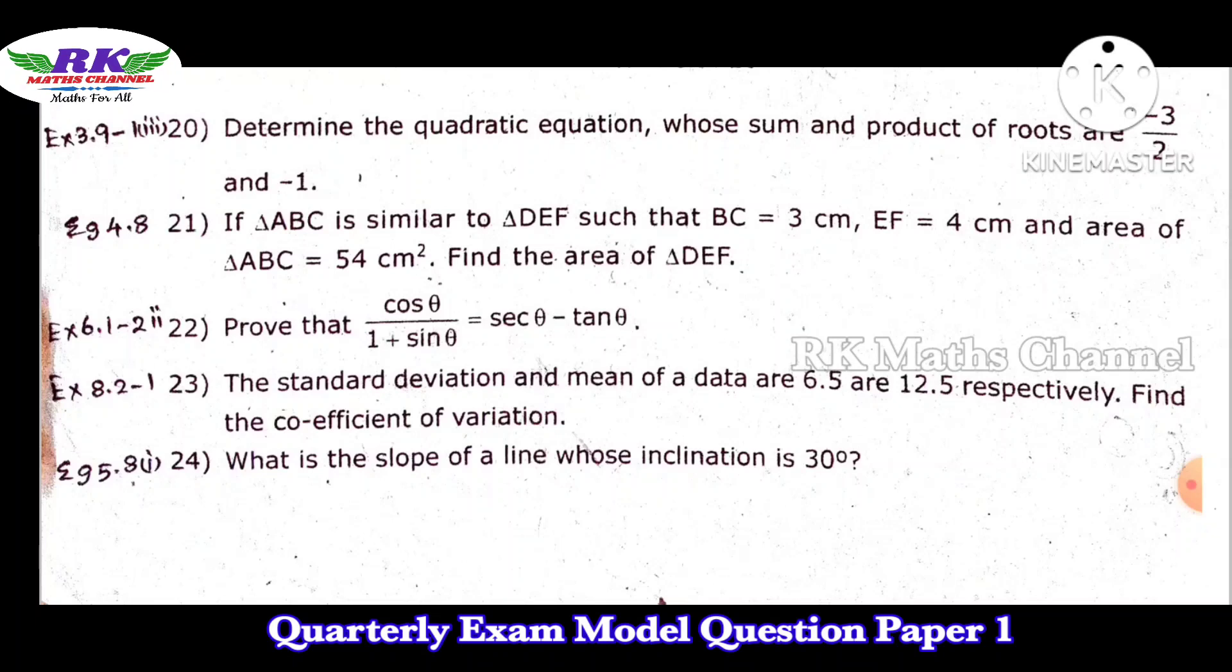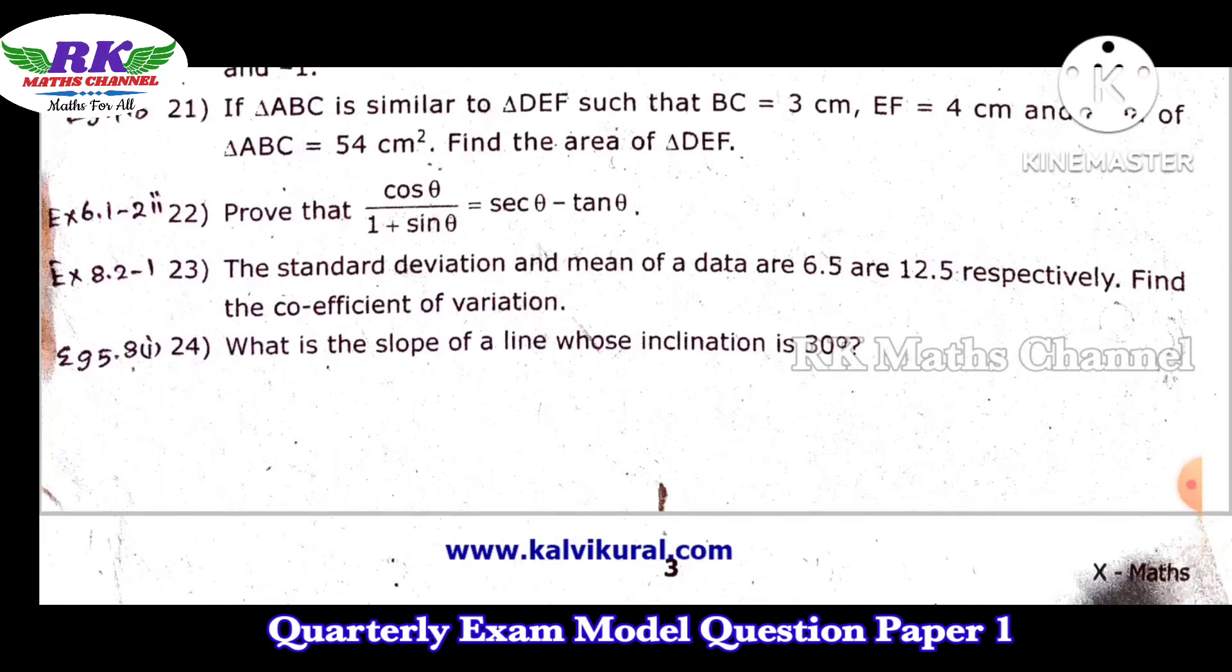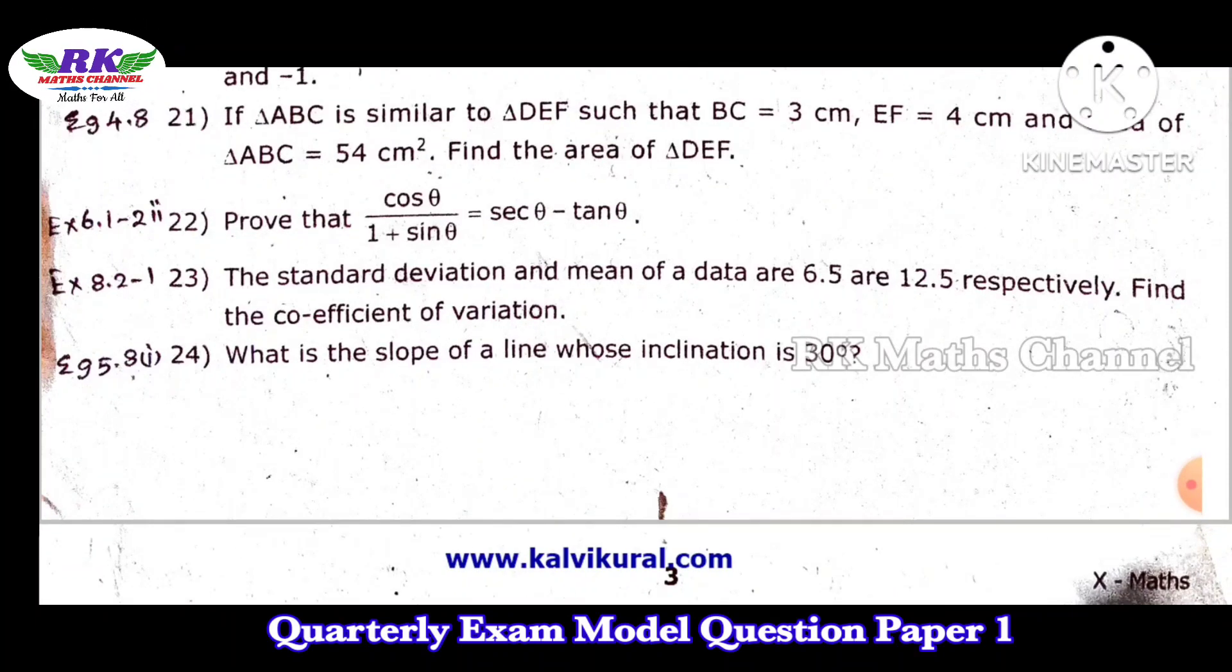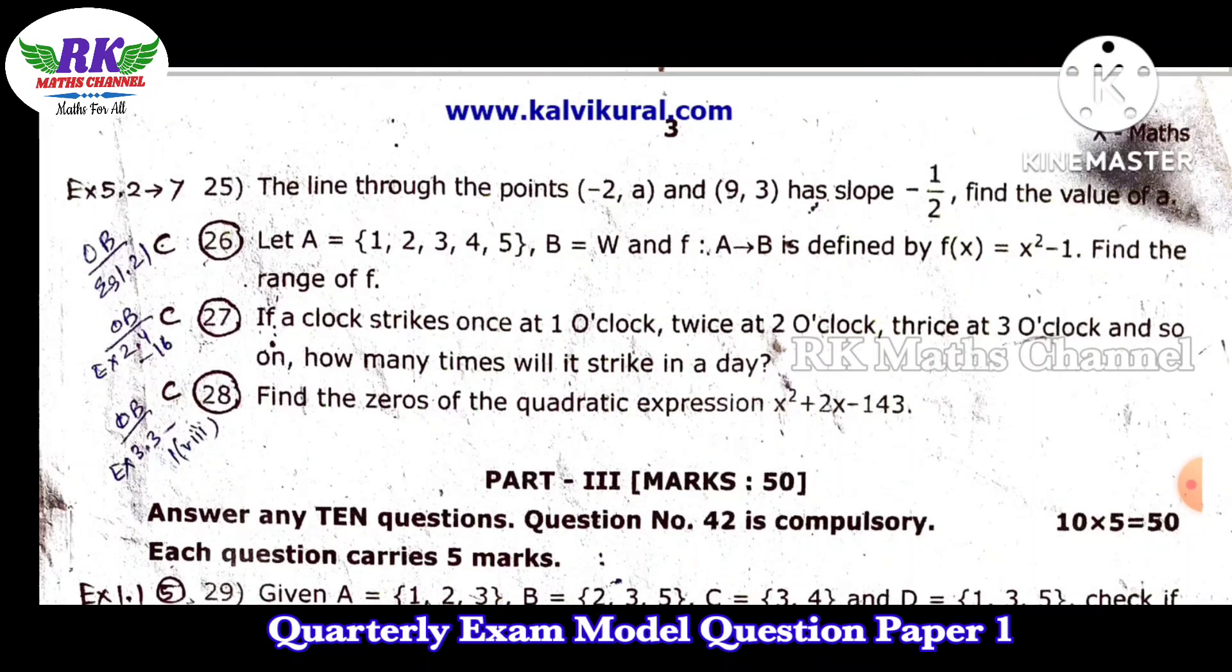So sum alpha plus beta, alpha into beta, that is the equation. x square minus alpha plus beta into x plus alpha into beta, substitute and simplify quadratic equation. Question number 21, similar triangle ABC DEF, see the example problem example 4.8. Question number 22 is the trigonometry, important. Question number 23, standard deviation, that means statistics.